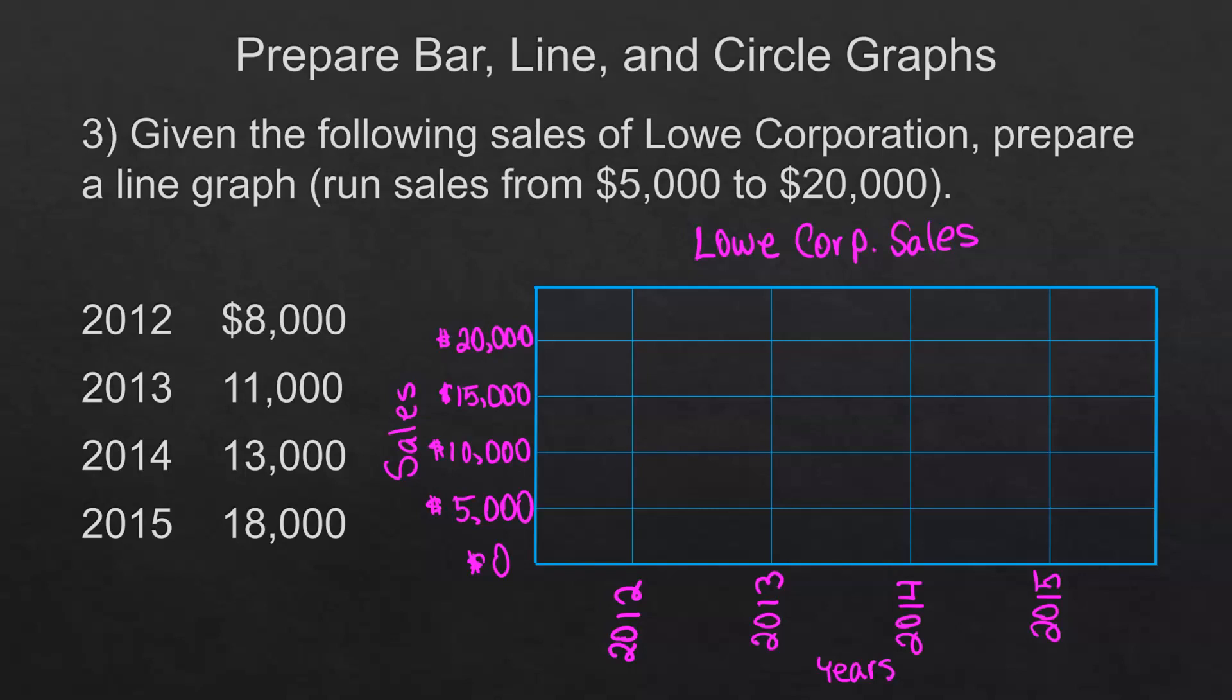Then I just graph the point so for the 8,000 I know it's above the middle part because that would be like 7,500. This one is a little bit above and then this one is a little bit above halfway between those two numbers, the 10,000 and the 15,000. Then 18,000 would be somewhere above the middle portion of that. Then you just connect these with lines moving to each one. We've drawn a line graph to show that the sales have been increasing starting in 2012 through 2015.